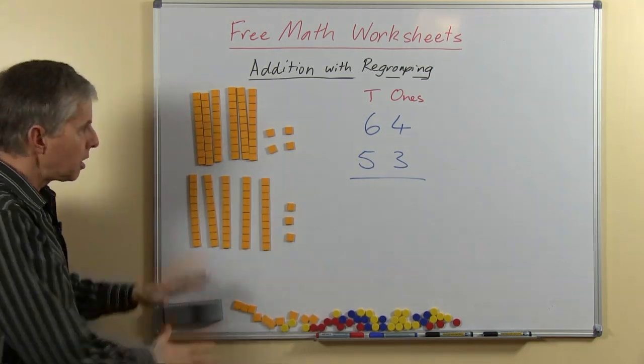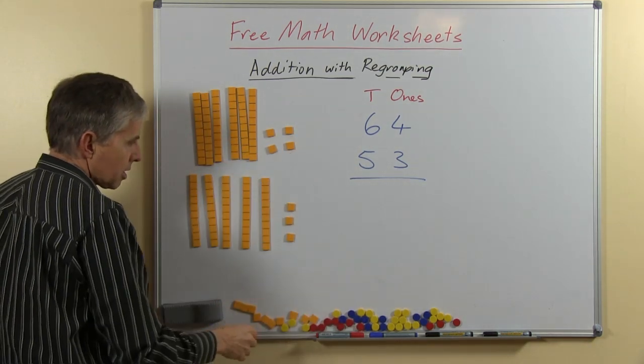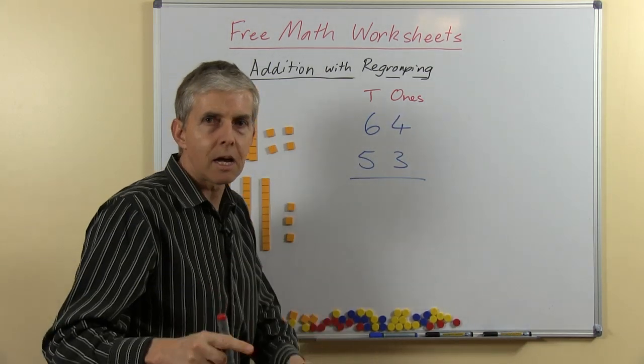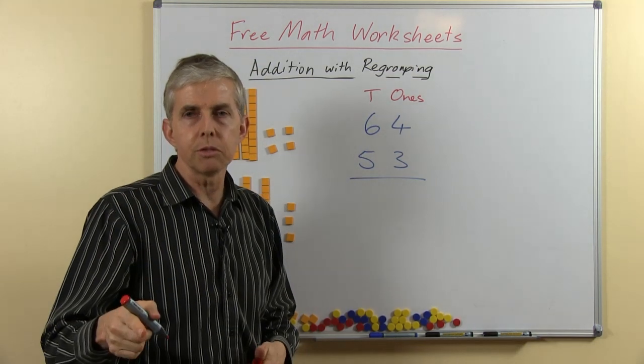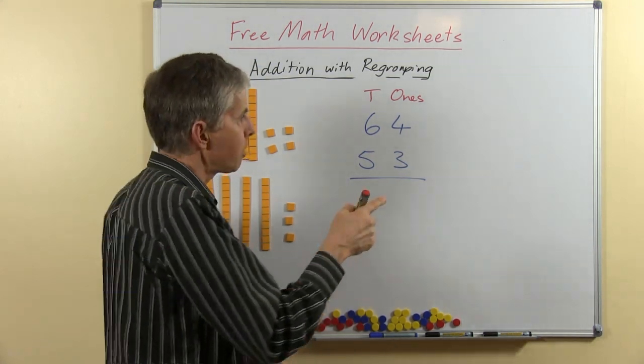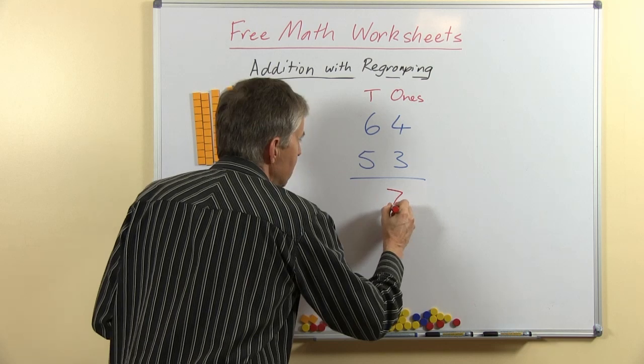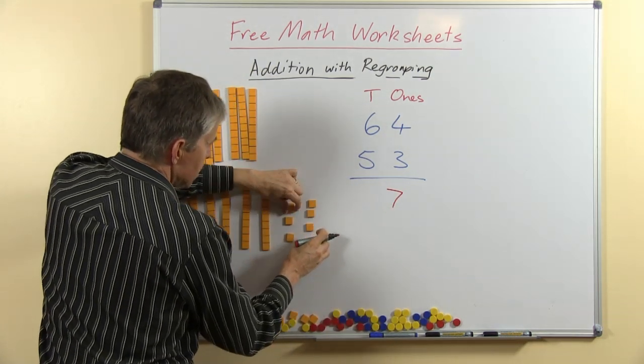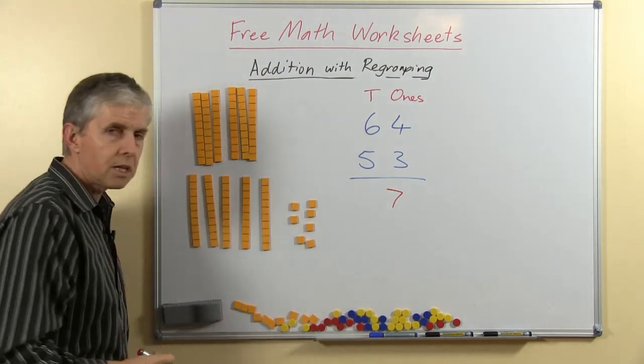Alright, so you can see the tens and the ones just as we have on the written version. 4 plus 3, that's a number fact. You probably know double 3, double 3 is 6, 4 plus 3 must be 1 more, that's 7. So we can push all these together and that makes 7. Alright, so we can see those.